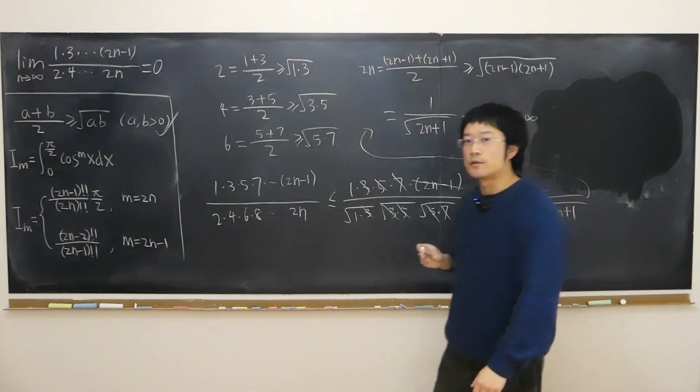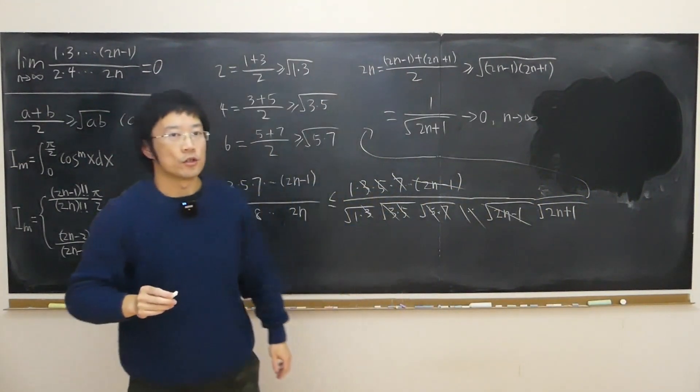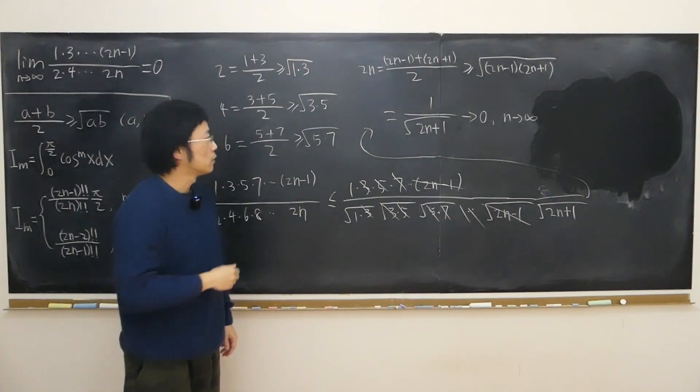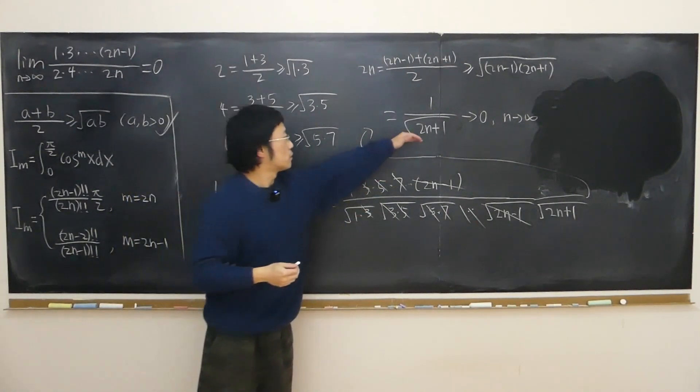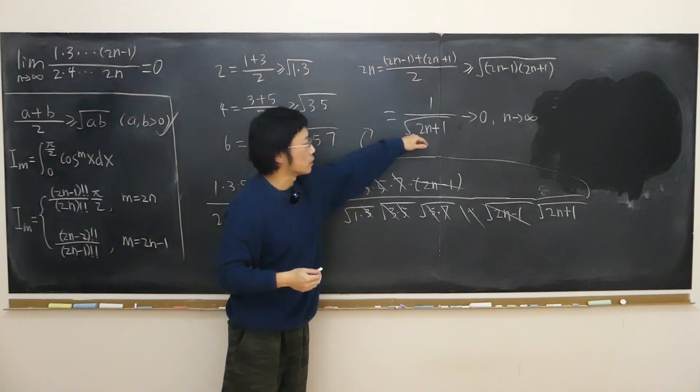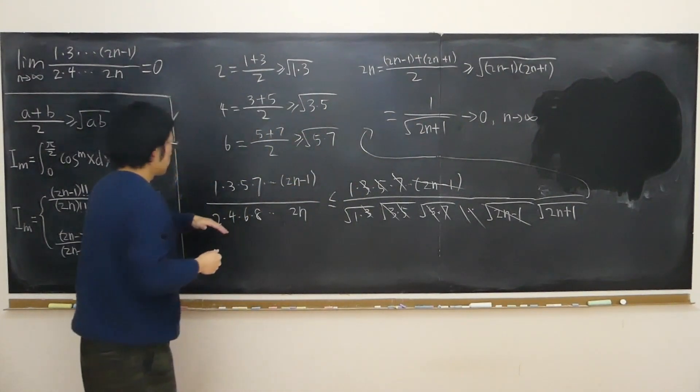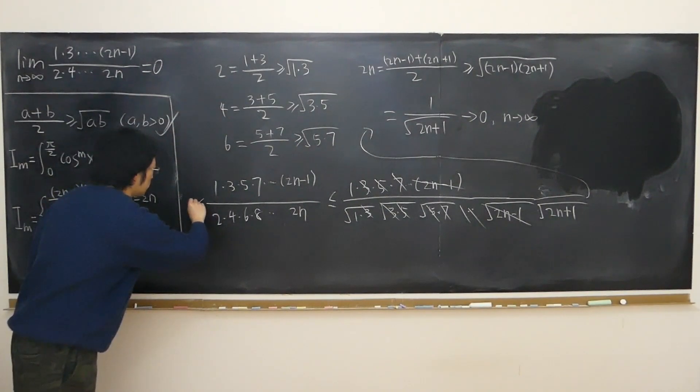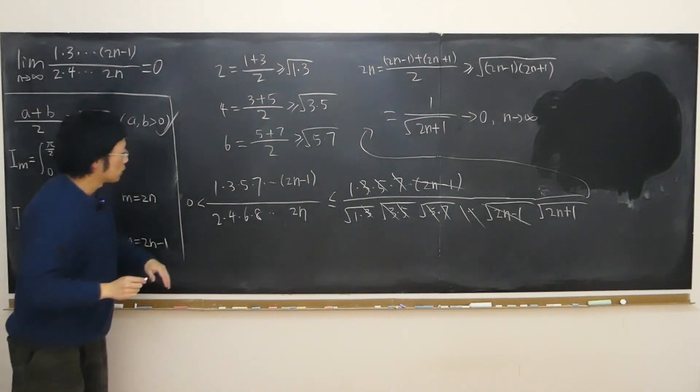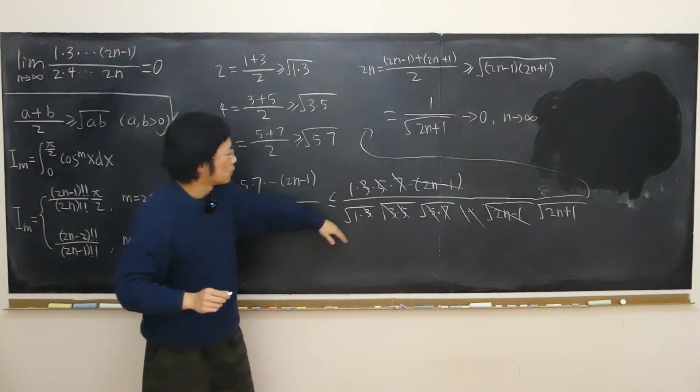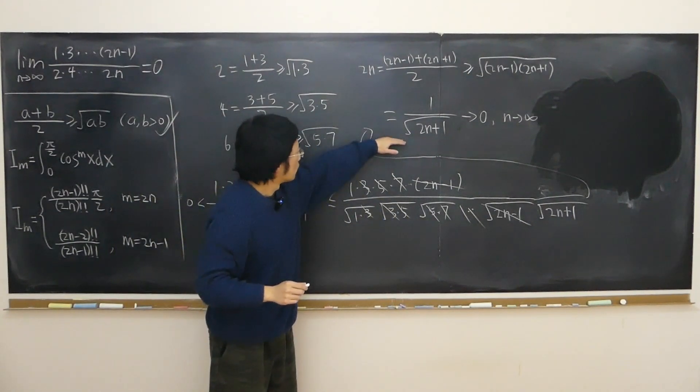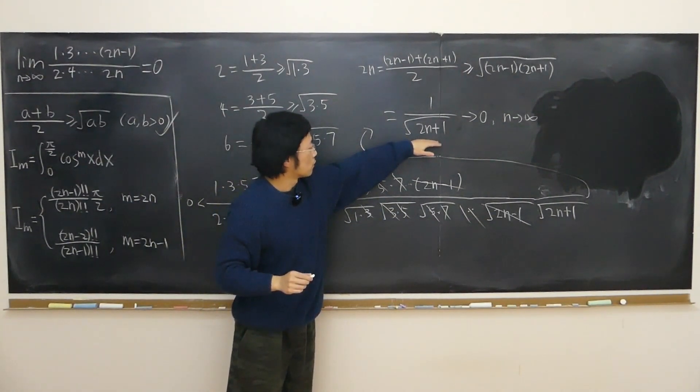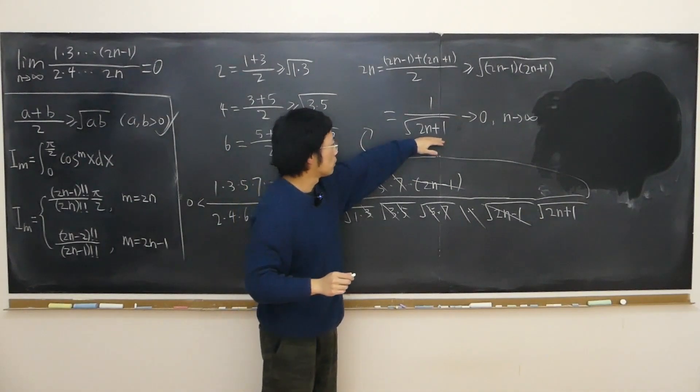So we can easily show that this approaches zero as n approaches infinity, whether you want to use rigorous epsilon-n language definition or whatever, which is not essentially hard to show. So using squeeze theorem, this is already obviously larger than zero.